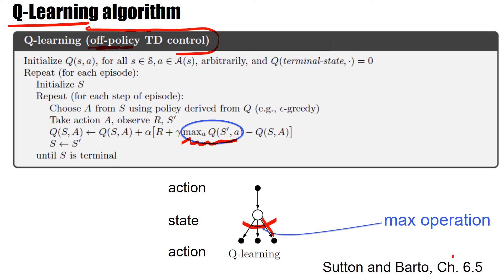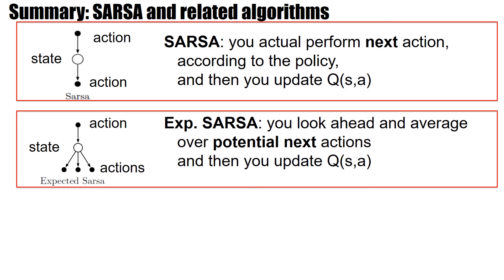So the new thing is now that I have the max operation. And so here are the different versions of SARSA now. Each time with a backup diagram. In the normal SARSA, I actually perform the next action. And then I update with the Q(s', a') that I observe in the next action. And that's used to update Q(s, a) in the state in the branch up here.